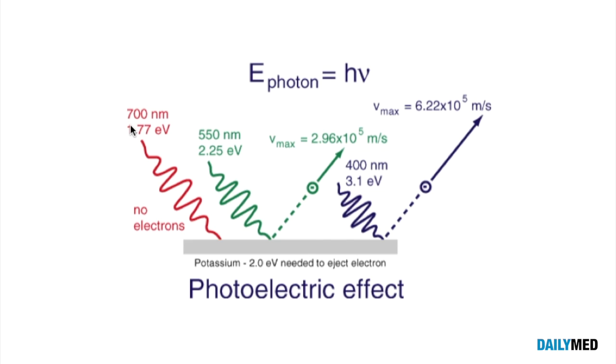So the shorter or the smaller the wavelength, the more energetic the photon will be. In this example, the red photon or the red light photon has a lower energy,